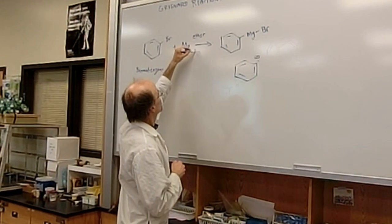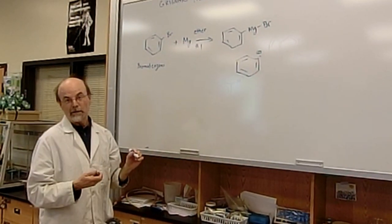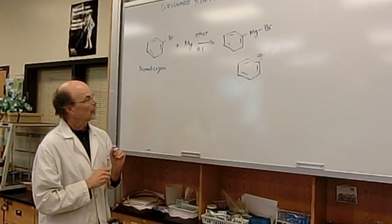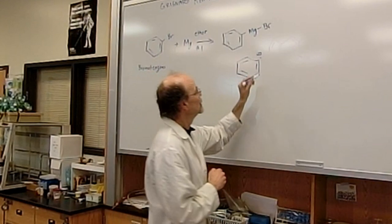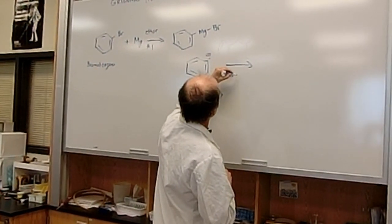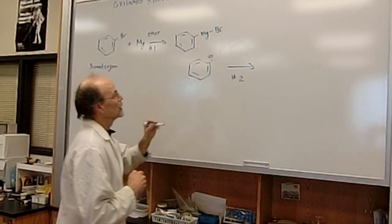So this is step number one, and this will take anywhere from 20 minutes to two hours to make, just depending on the conditions. But once you generate the Grignard reagent, step two, which is very interesting, will be reacting your Grignard reagent with dry ice or CO2.